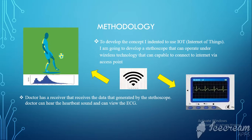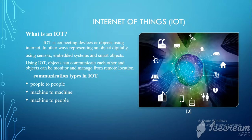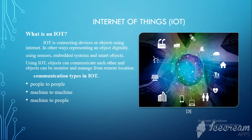We will discuss this methodology deeper in my next videos. Internet of Things — what is IoT? There are a lot of definitions for IoT. Simply we can say it is connecting devices or objects using the internet, or in other words, representing an object digitally with the use of the internet. To make this possible, engineers use sensors, embedded systems, and smart objects.